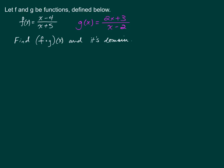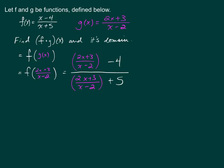Let f and g be functions defined below. Find f composed g of x and its domain. So f composed g of x is the same thing as writing f of g of x. I can replace this g of x with everything on this side, which allows me to write f of the following. Now I just have to look back up at function f and substitute this in for the x's on the right side of that function. This looks scary — we don't want fractions within fractions.